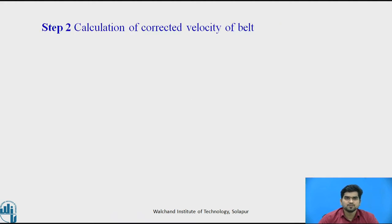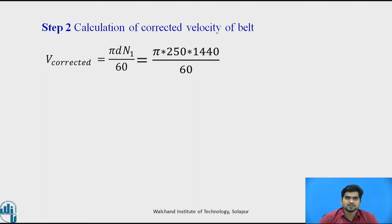In step number 2, calculate the corrected velocity of the belt. Using the formula V_corrected = π·d·N₁ / 60, with d = 250 mm and N₁ = 1440 rpm, you get the corrected velocity as 18.85 meters per second.